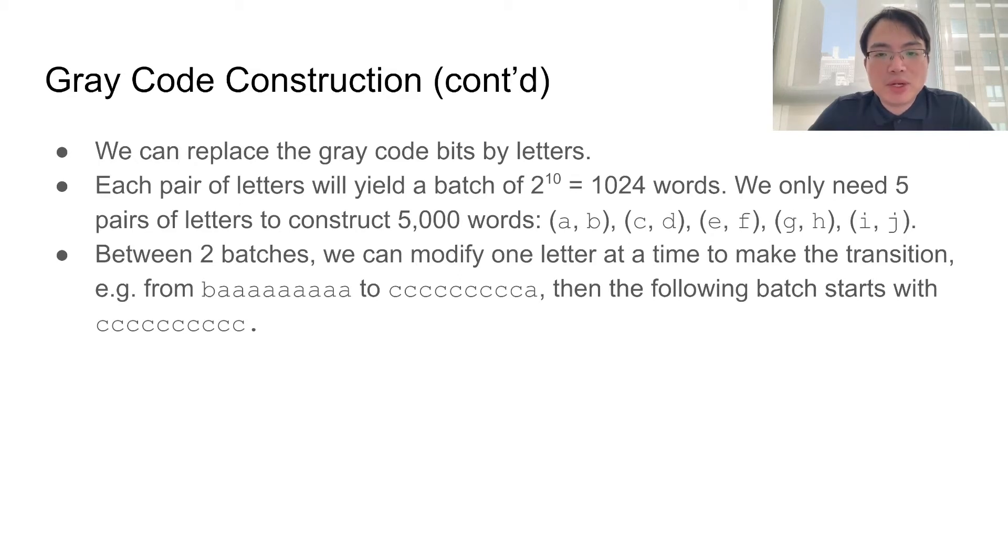Each pair of letters will give us one batch of 1024 words. Between two batches, we will need to modify one letter at a time to make the transition. For example, the last word in our first batch is going to be 1 b plus 9 a's, and we want to make a transition to 10 c's, which is the first word of our second batch.